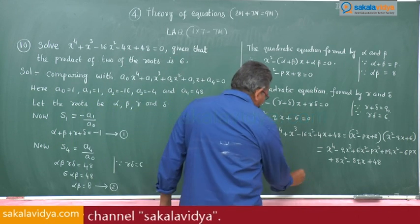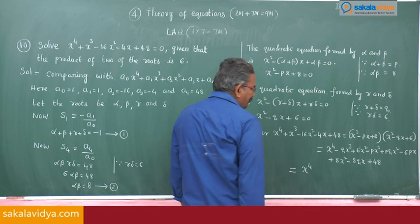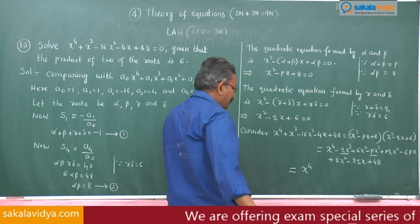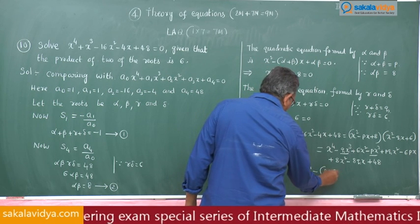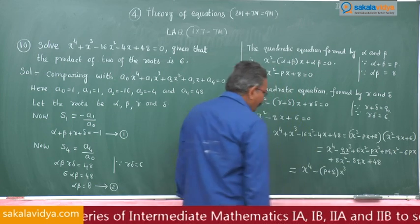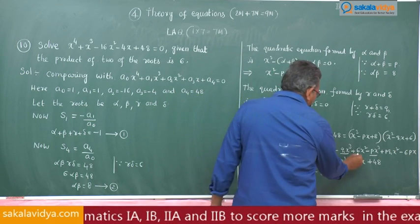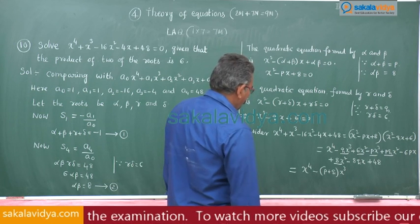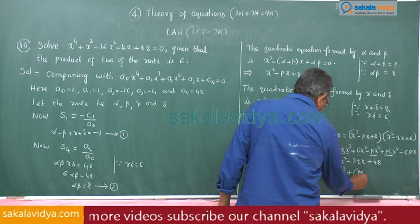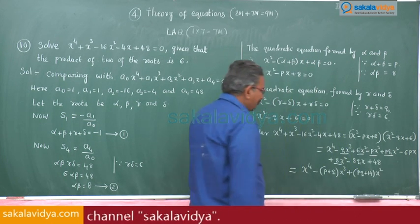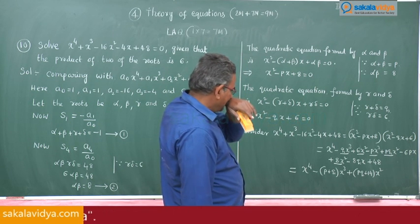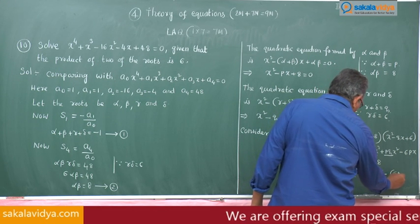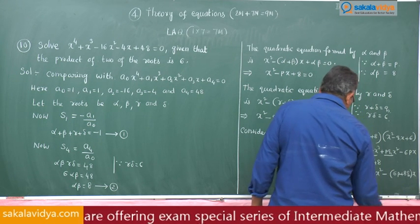Simplifying the right-hand side: x to the power of 4, then the x cubed terms give minus (p plus q) x cubed. The x squared terms give (p q plus 14) x squared. The x terms give minus (6p plus 8q) x, and the constant term is 48.